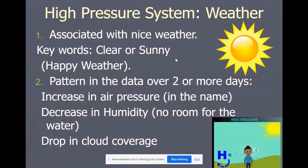Now a high pressure system is going to bring a couple of different types of weather. So the main things that we would see and observe without any tools: high pressure is associated with nice weather. So keywords we would look for is like clear or sunny. So high pressure equals happy weather, whether that's true or not for you. Just go with it. Now as we're collecting our weather data, when we talk about pattern changes, we need time. So this has to be happening over two or more days. First of all, I would see an increase in the air pressure, hence the name a high pressure system. The pressure is getting higher.